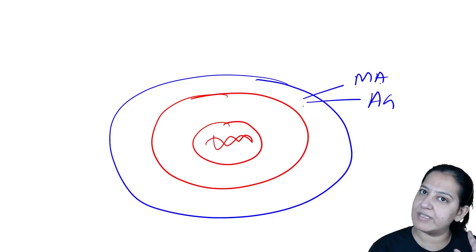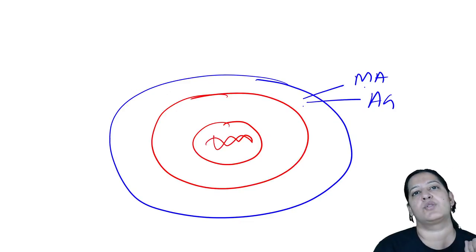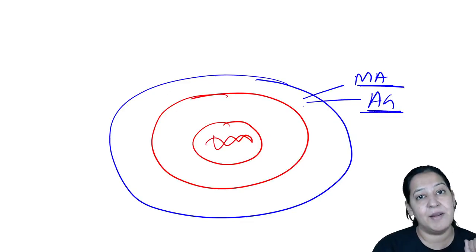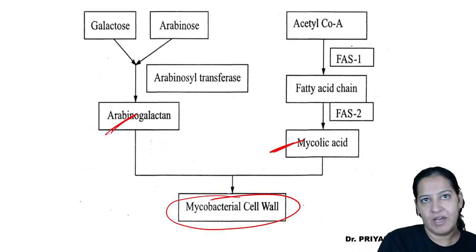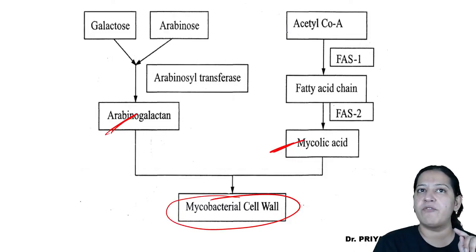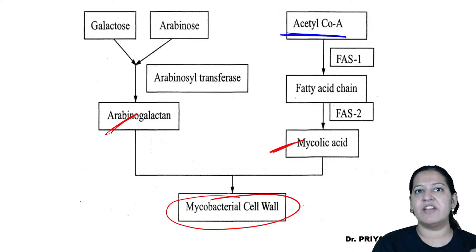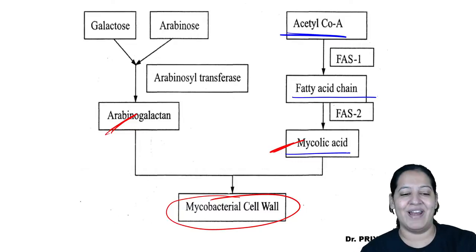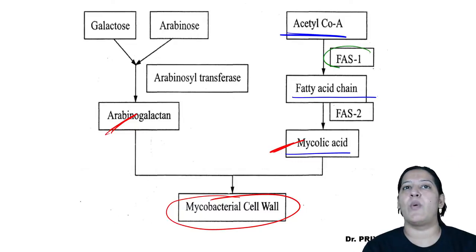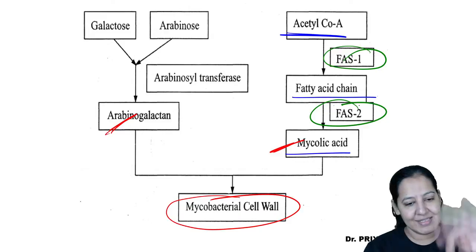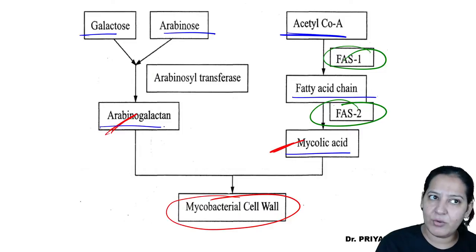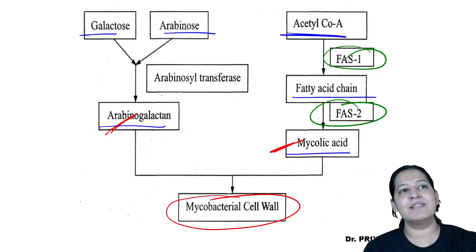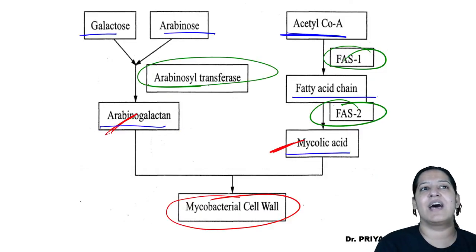To form the cell wall, the bacteria must synthesize mycolic acid and arabinogalactan. Mycolic acid is formed from acetyl-CoA, converting to fatty acid chain and then mycolic acid — requiring enzymes FAS1 and FAS2. Galactose and arabinose combine to form arabinogalactan using the enzyme arabinotransferase.